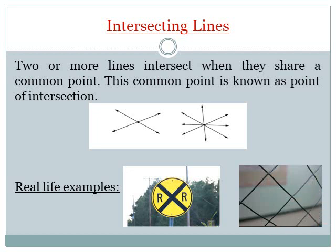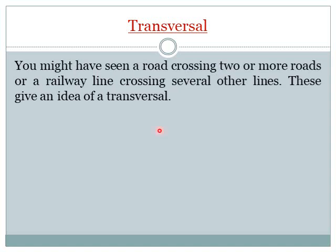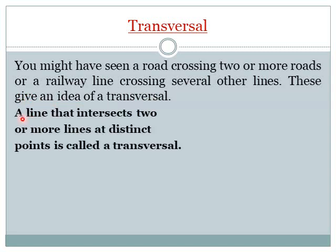You might have seen a road crossing two or more roads, or a railway line crossing several other lines. These give an idea of a transversal. So what is a transversal? A line that intersects two or more lines at distinct points is called a transversal.